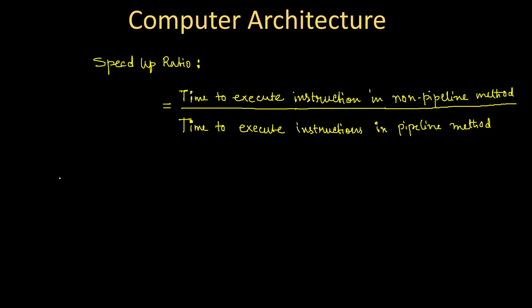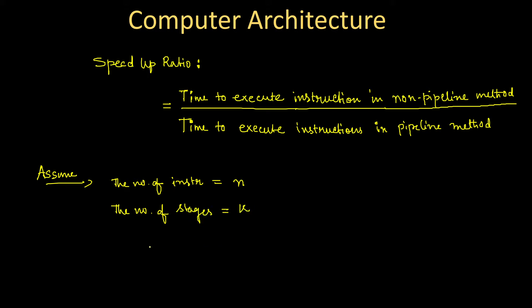Assume that the total number of instructions is equal to n, the number of stages in your pipeline is equal to K, and the time to execute in a stage is equal to tau (τ). With these three parameters, we have to evaluate the speed-up ratio.